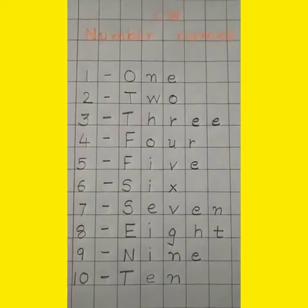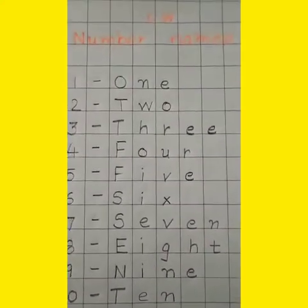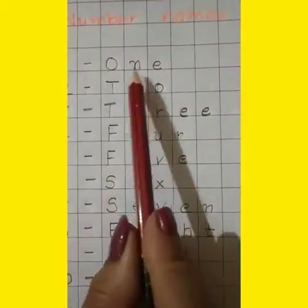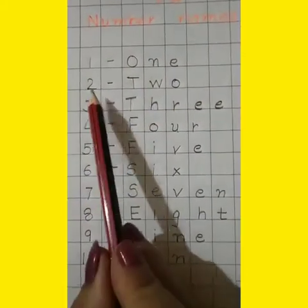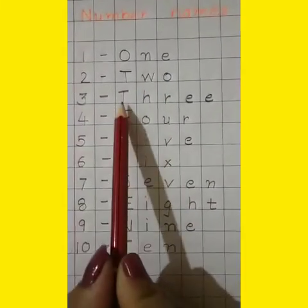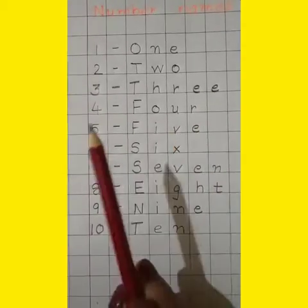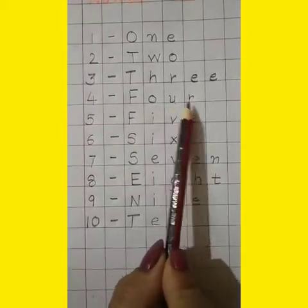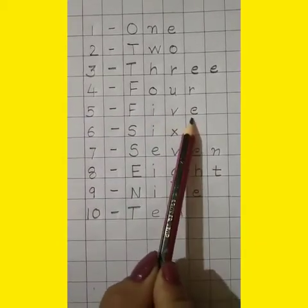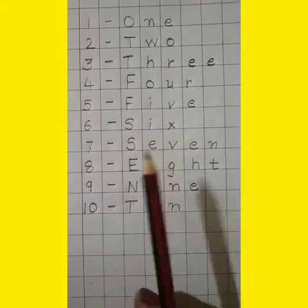We have revised one more time. Number names: 1 — O-N-E. 2 — T-W-O. 3 — T-H-R-E-E. 4 — F-O-U-R. 5 — F-I-V-E. 6 — S-I-X.